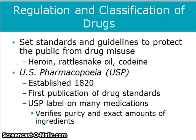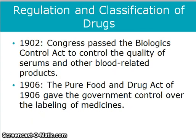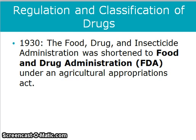The U.S. Pharmacopoeia was established in 1820, and it was the first publication that had standards for drugs. Prior to that, standards and guidelines to protect the public from drug misuse did not exist. In 1902, Congress passed the Biologics Control Act to control the quality of serums and other blood-related products. In 1906, the Pure Food and Drug Act gave the government control over the labeling of medicines. In 1930, the Food, Drug, and Insecticide Administration was shortened to Food and Drug Administration under an Agricultural Appropriations Act.